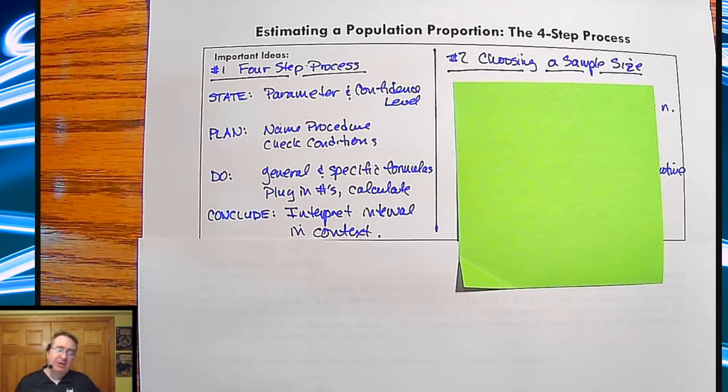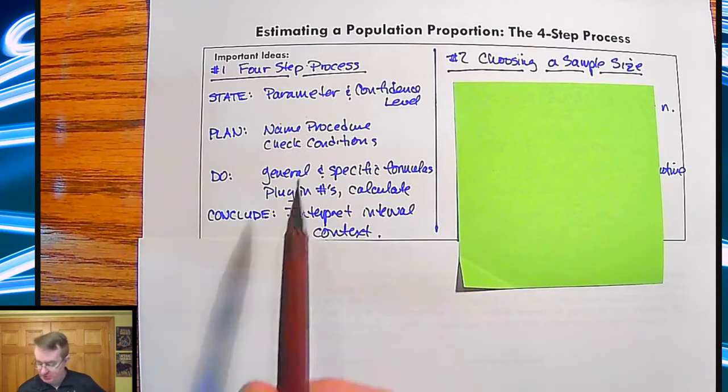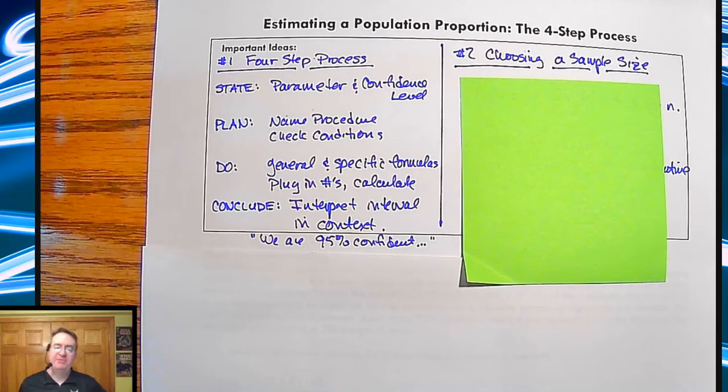And then the last step, in which case probably the most important step, one of the steps that many people get wrong when they're trying to do statistics, is interpret the interval in context. Tell us what this number here means in relationship to what's going on up here with your parameter. So that is always going to look like we are 95% confident that fill in the blank.